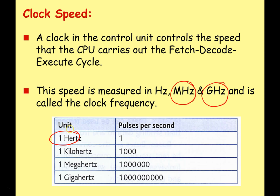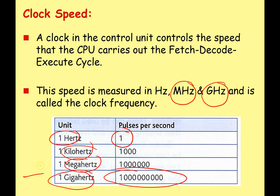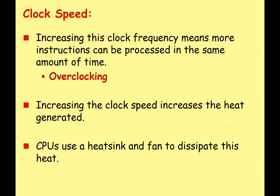One hertz is equivalent to one cycle per second. One gigahertz is equivalent to one billion cycles per second. You might also hear people talking about megahertz and kilohertz, but usually for CPU performance, gigahertz is the one we're going to use the most because computers perform calculations so quickly. Increasing the clock frequency means that more instructions can be processed in the same amount of time, and this is what we call overclocking. Some CPUs let you raise the clock frequency, meaning it can do more instructions in the same amount of time.